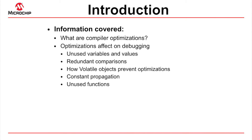This presentation looks at optimizations performed by the MPLAB XC8 C compiler that might result in unexpected behavior when debugging. Optimization actions, how these manifest themselves when debugging a project, and how these are deactivated are all discussed.